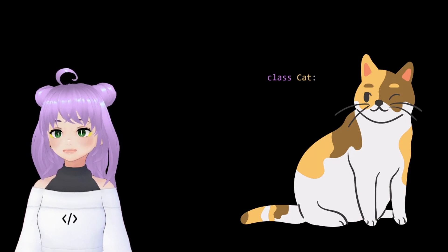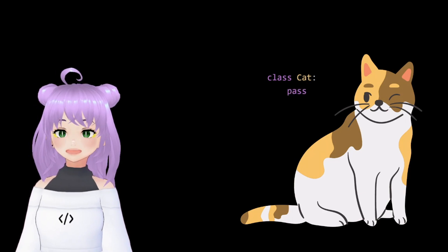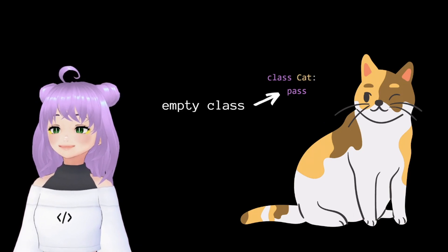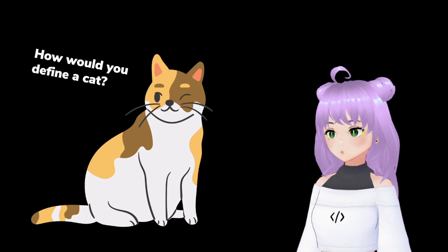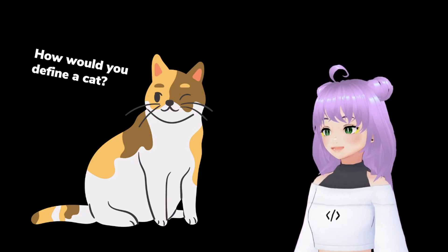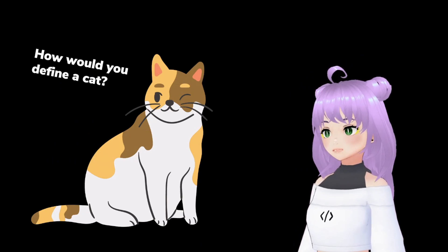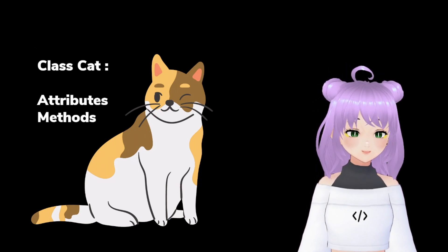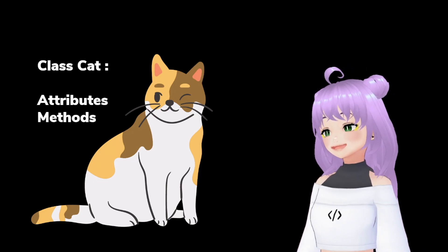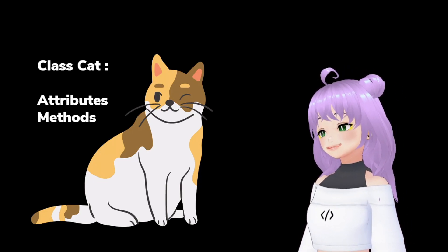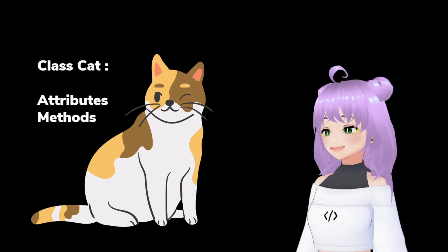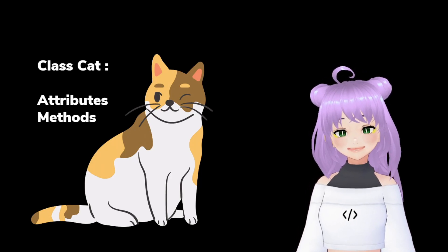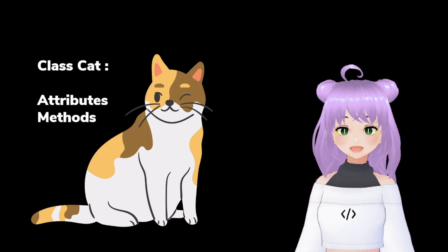You write two points and pass. And just like that, you just created a new class. However, this class is empty. Before we continue, I want you to think a little bit about this. How would you define a cat to someone who has never seen one? An easy way to define a cat is describing how it looks like and what things it can do that other animals can't. And that is why we are going to add attributes and methods to define our cat class.